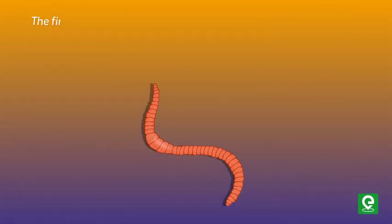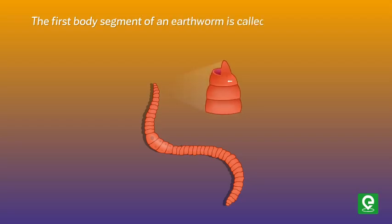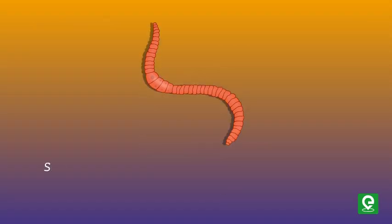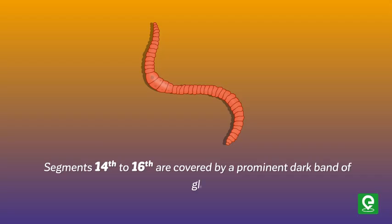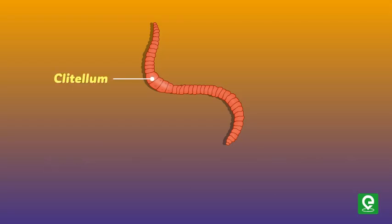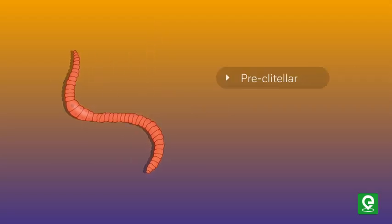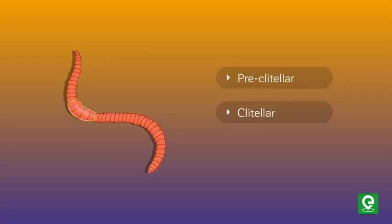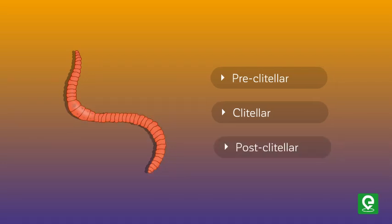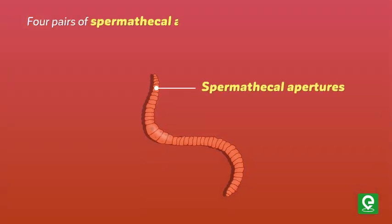The first body segment of an earthworm is called the peristomium or buccal segment, which contains the mouth. In a mature earthworm, segments 14 to 16 are covered by a prominent dark band of glandular tissue called the clitellum. This dark band makes the body divisible into three prominent regions: pre-clitellar, clitellar, and post-clitellar.